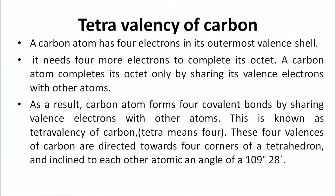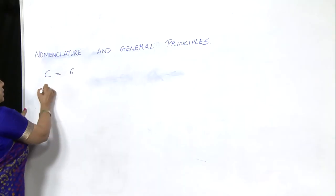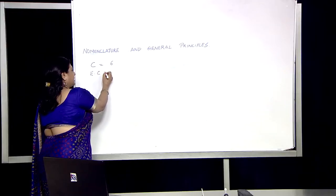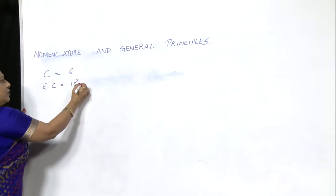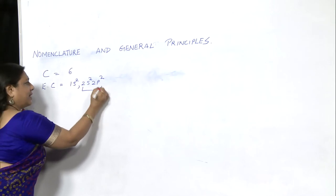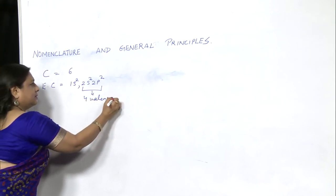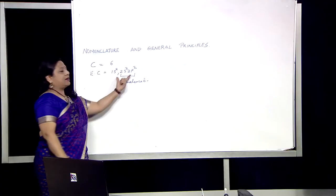One more important property of carbon is tetravalency of carbon. A carbon atom has four electrons in its outermost valence shell. Carbon has atomic number 6. So when we write the electronic configuration, it is 1s2, 2s2, 2p2. So these are the 4 valence electrons in carbon.